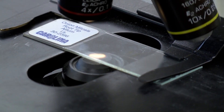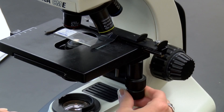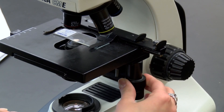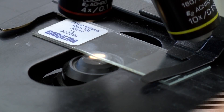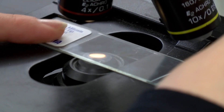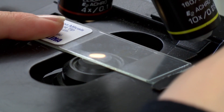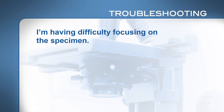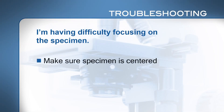If your slide doesn't move when you turn the knobs to adjust the slide holder, make sure you are using the right knobs and that the slide is clipped in place properly. If you are having trouble finding the specimen, make sure your specimen is centered.